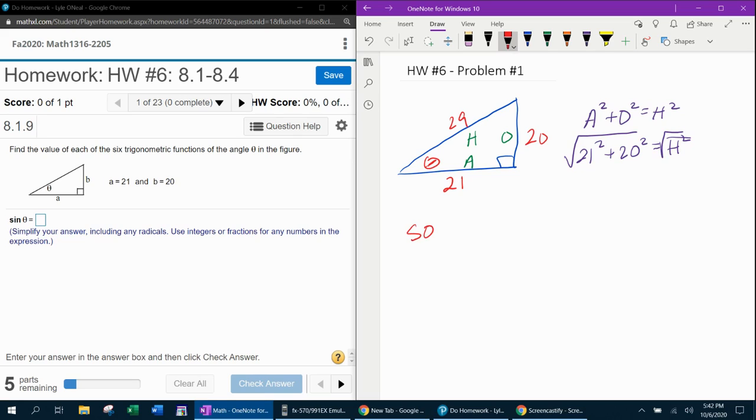And now using SOHCAHTOA, we can find the first three trig functions. And if you're not familiar with SOHCAHTOA, here's what he says. He says sine is opposite over hypotenuse. Cosine is adjacent over hypotenuse. Tangent is opposite over adjacent.